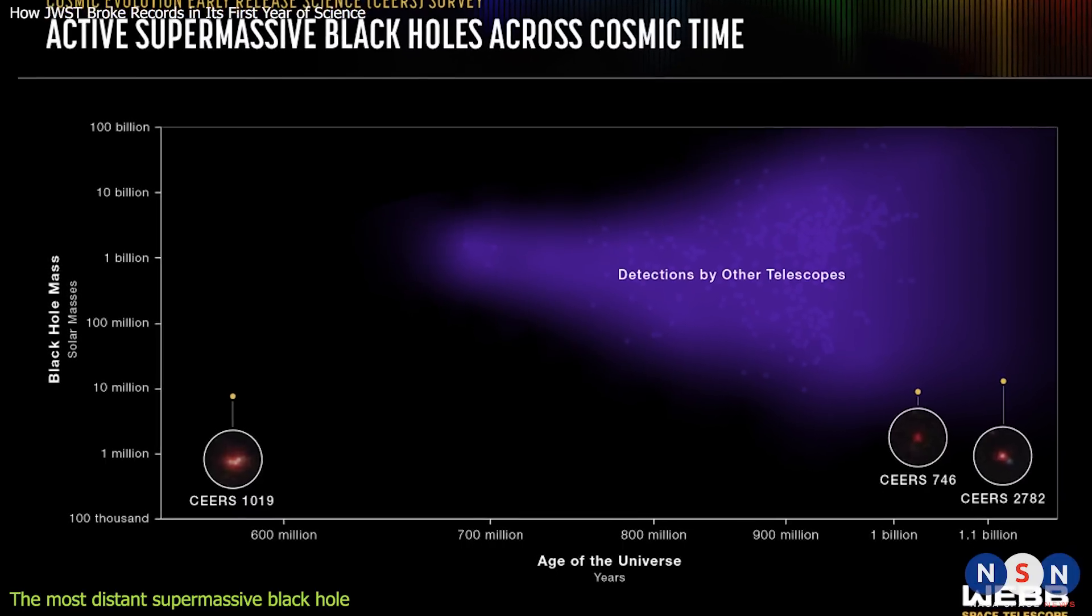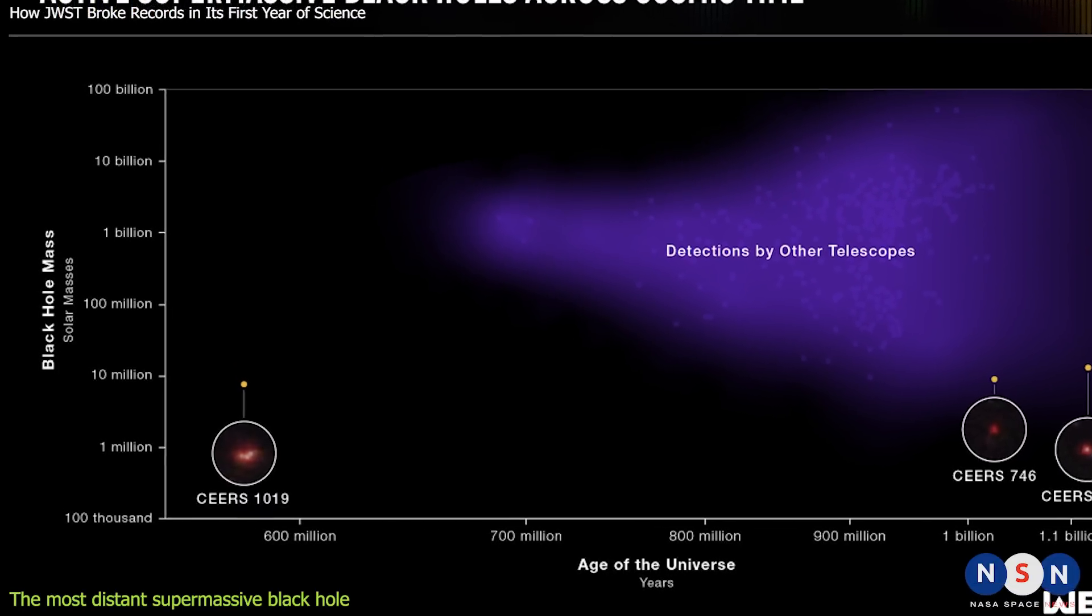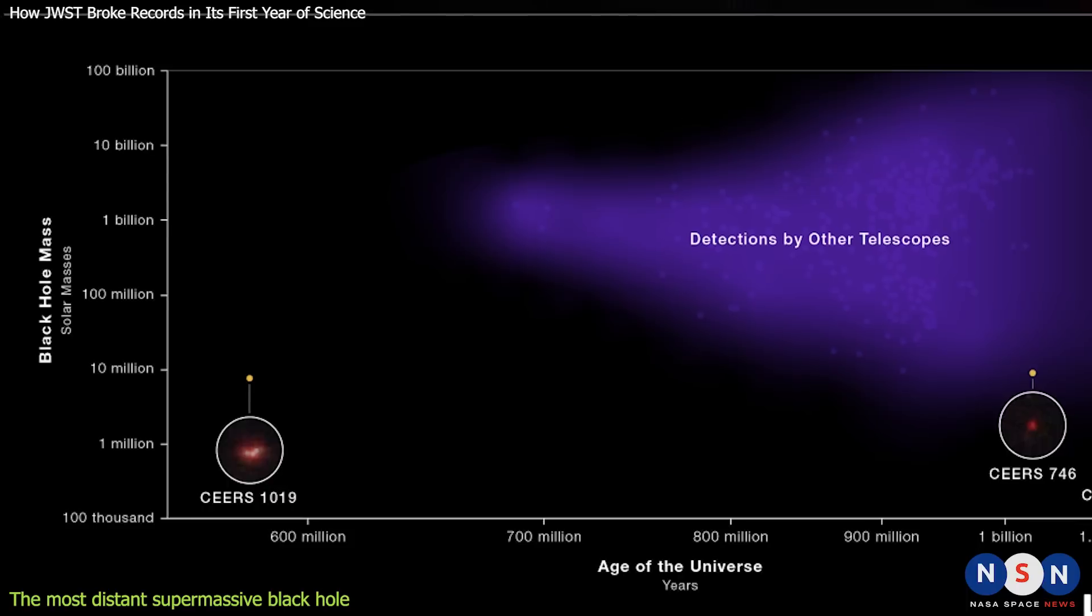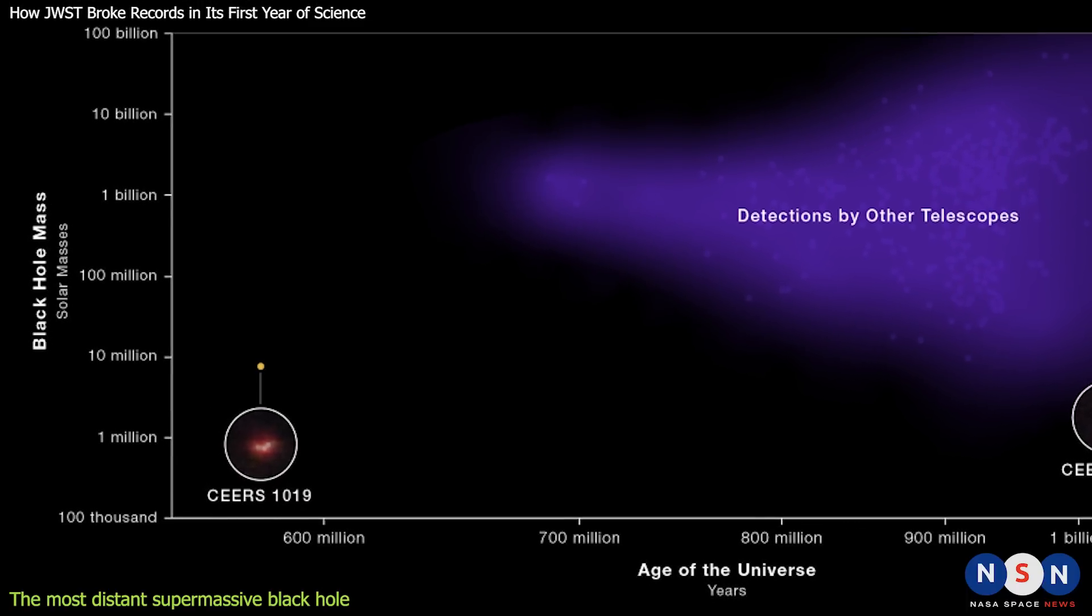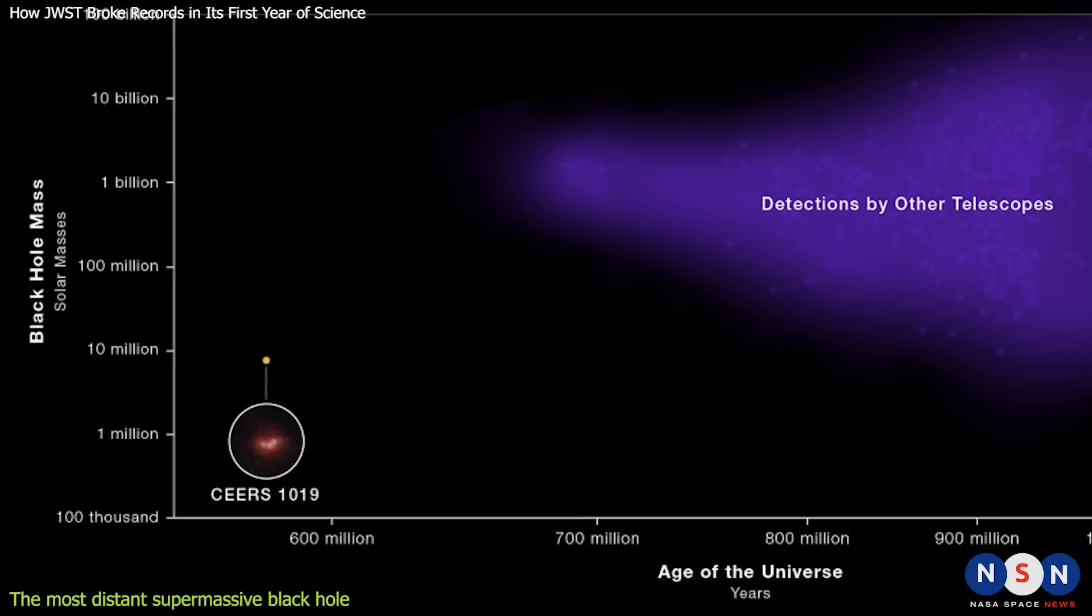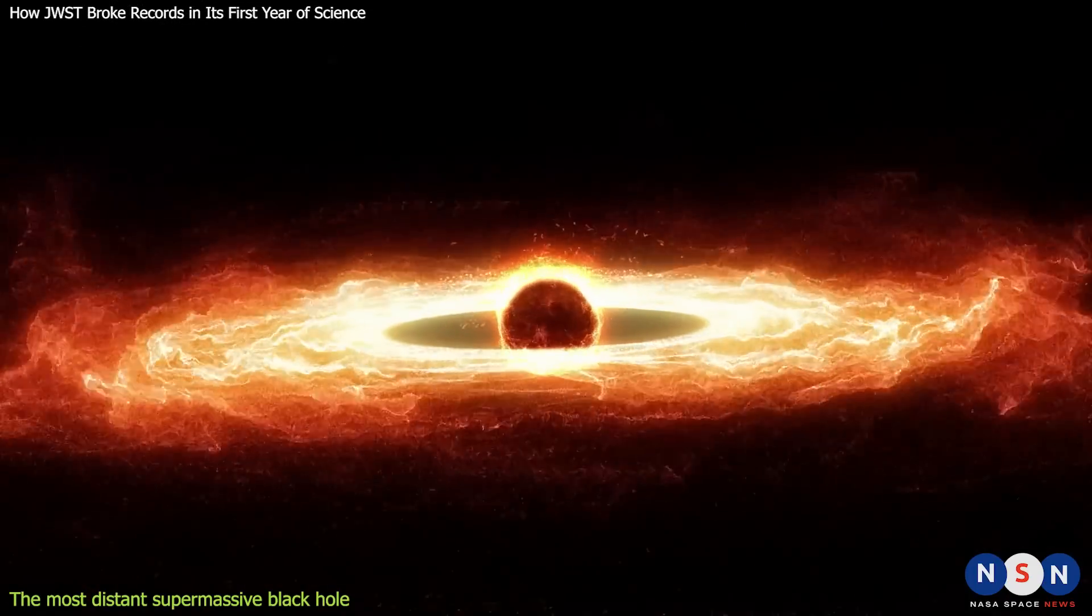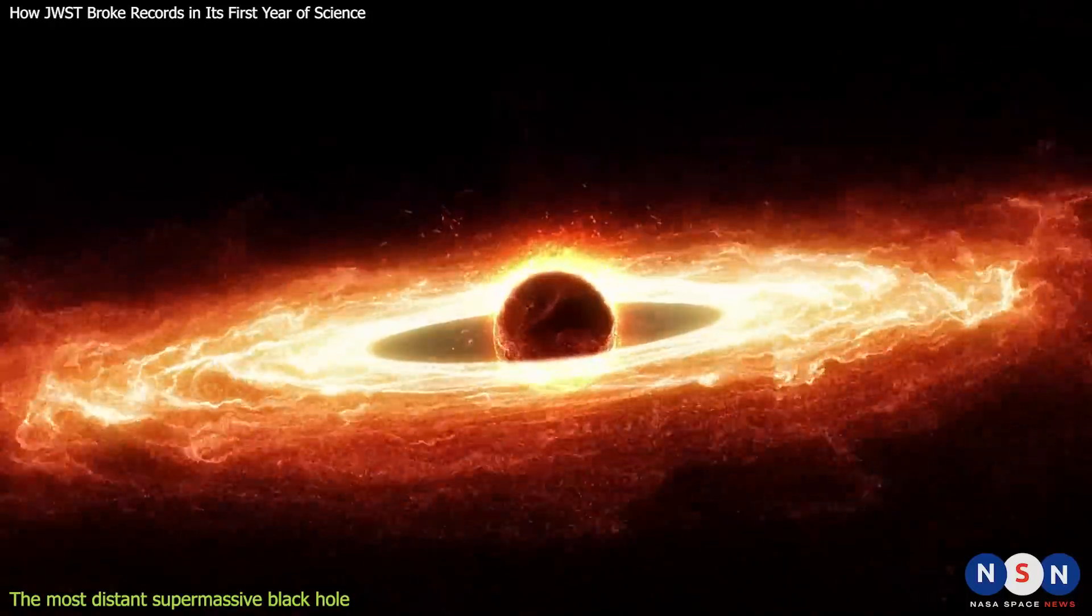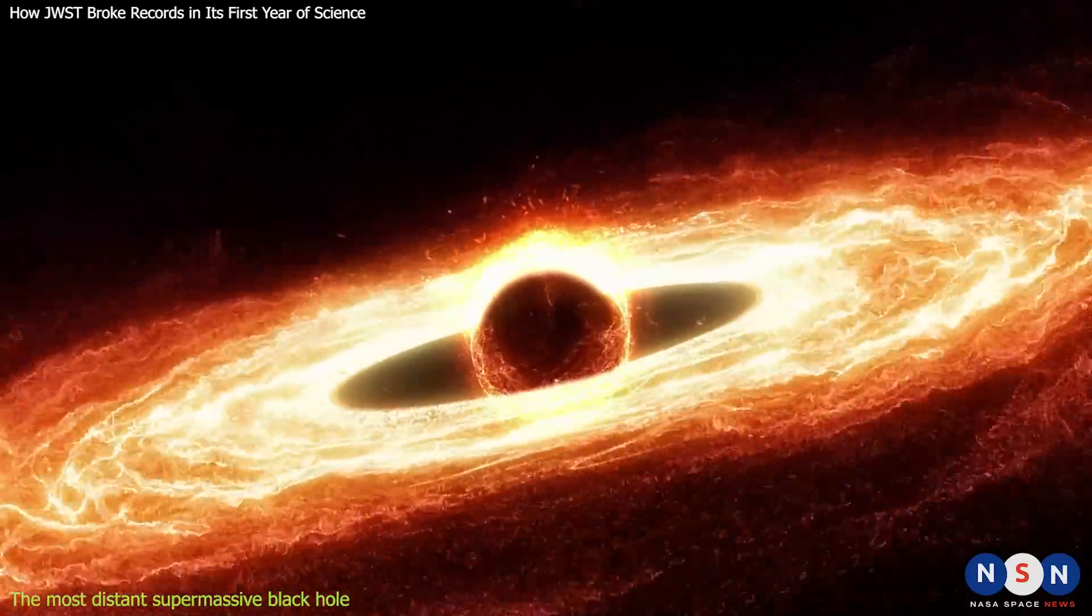In September 2022, a team of astronomers announced that they had detected the most distant supermassive black hole ever discovered. This black hole is located in a galaxy called CEERS 1019, which is about 13.1 billion light-years away from us. That means we are seeing it as it was when the universe was only 630 million years old, less than 5% of its current age.